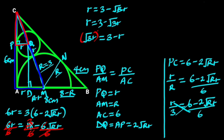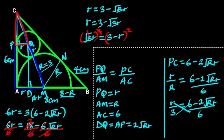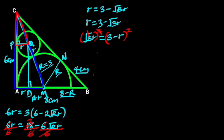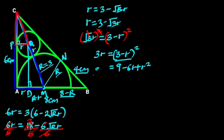Next, we take the square of both sides. The square will cancel out the square root, and we are left with 3r equals (3 minus r)². Expanding (3 minus r)² gives us 9 minus 6r plus r². So 3r equals 9 minus 6r plus r².